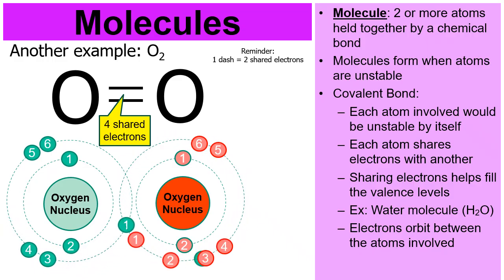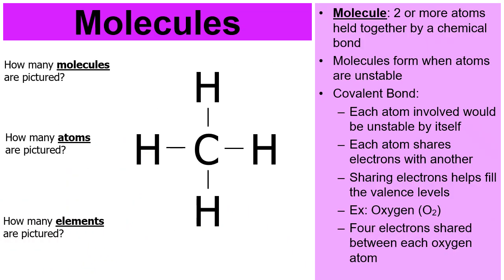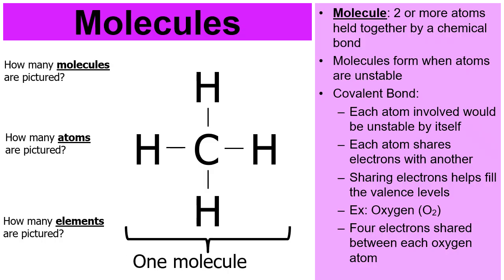Now look at this picture and try to answer these three questions. How many molecules are pictured? That is one big molecule because all the atoms are bonded together by the dashes — that's one big molecule, just one. How many atoms are pictured? I hope you said five — four H's plus the one C, four plus one makes five.